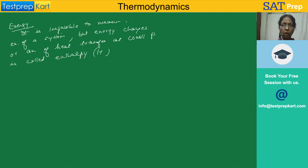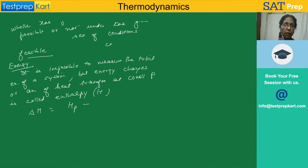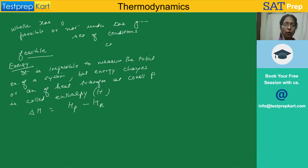We can't find out what is the energy of the reactant or energy of the product, but we can find out the change — that is delta H. So delta H equals enthalpy of products minus enthalpy of reactants. This is also the amount of heat transfer at constant pressure.